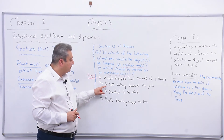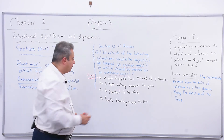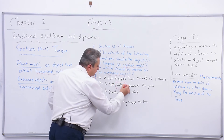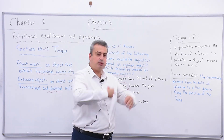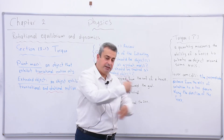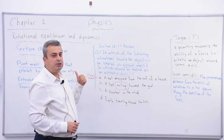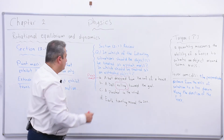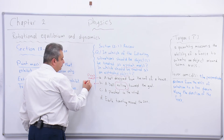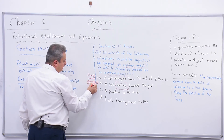For B: a ball rolling. Be careful about this key word - rolling. When it is rolling toward the goal, while it's rolling it is also rotating. We said that when we have rotational motion, it is an extended object. So for B, the answer is extended object.